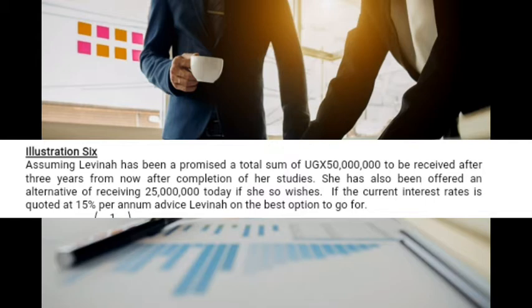Let's look at an example. Levinia has been promised a total sum of 50 million to be received after three years from now, after completion of her studies. So 50 million is the future value because it will be received three years from now. She has also been offered an alternative of receiving 25 million today.